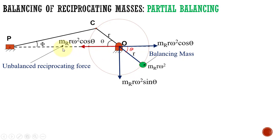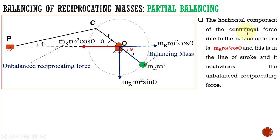And the vertical component is mrω²sinθ. So we are going to balance the reciprocating masses by adding a rotating mass, added along the direction of the crank in the opposite direction. The centrifugal force created by the balancing mass is mrω². Dividing that centrifugal force, you can get two components — one along the horizontal direction and another along the vertical direction. The horizontal component can completely balance the unbalanced reciprocating force, nullifying its effect, because both are equal and opposite in direction. Along the line of stroke, these two forces get neutralized.